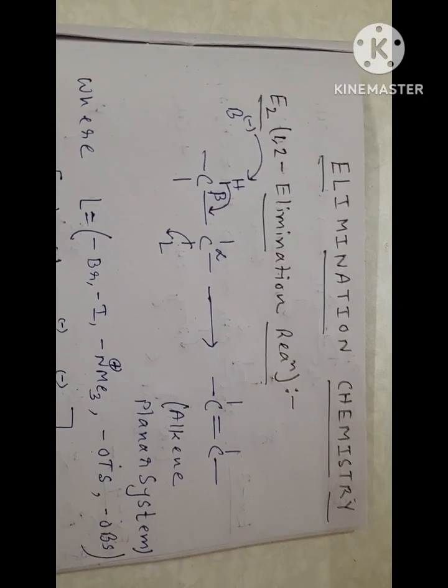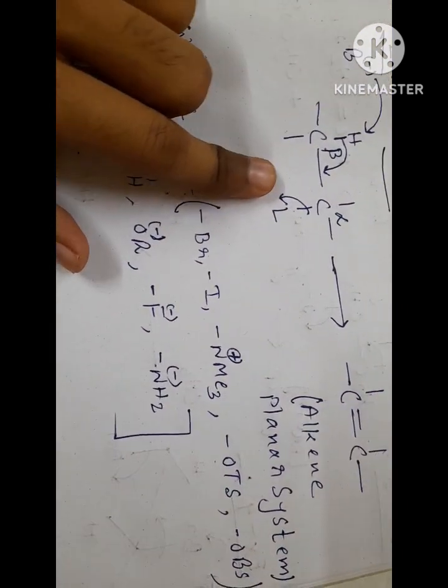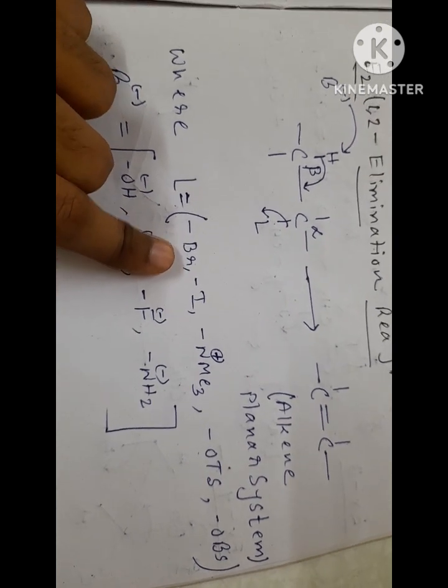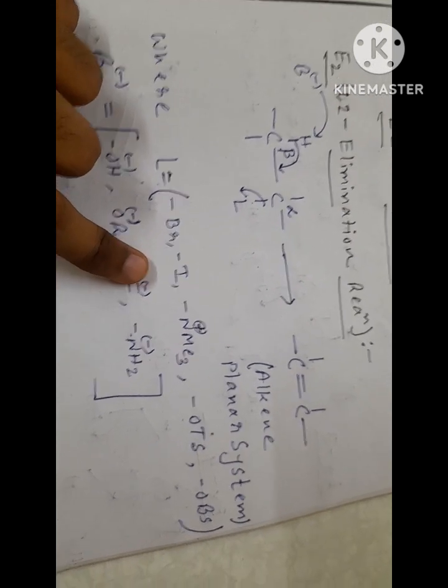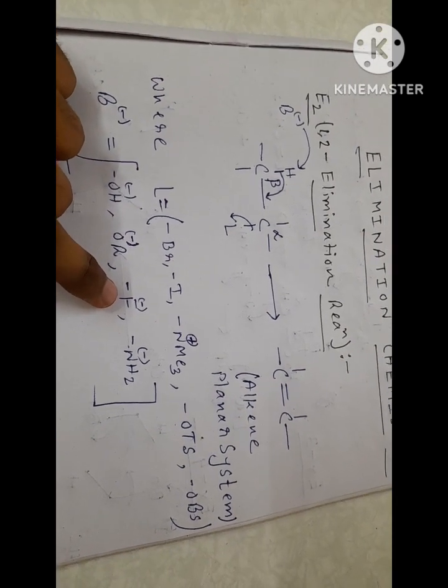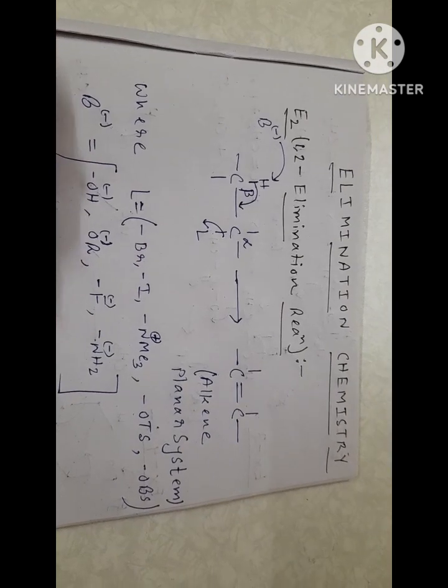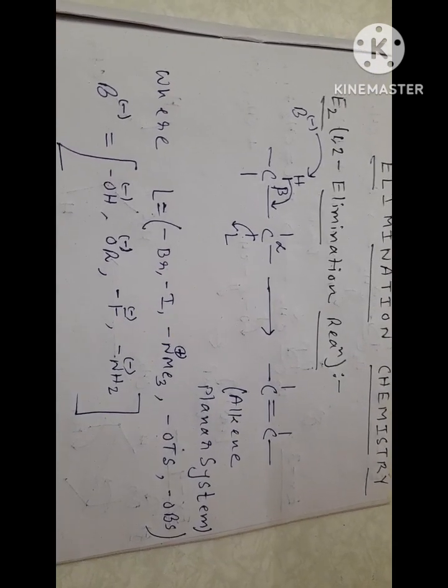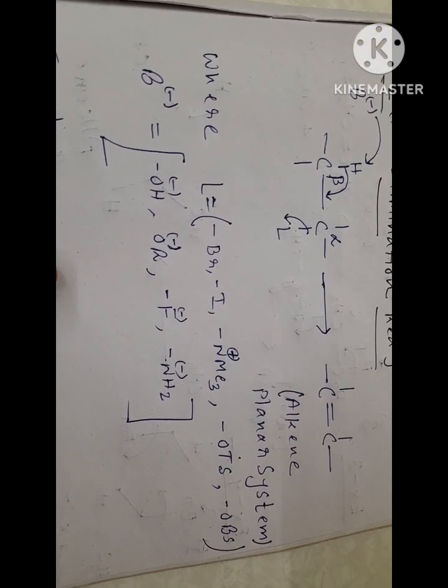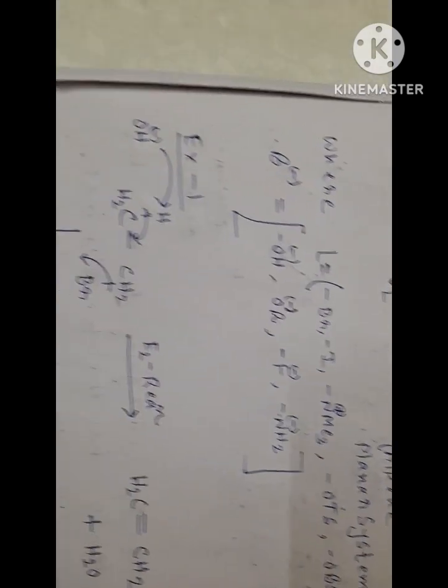How the reaction proceeds, let's get started. First, here you can see the leaving group. Various kinds of leaving groups are present like bromine, iodine, and ammonium plus. The greater the affinity of the group to leave from the system, greater will be the rate of the reaction. Base is also like hydroxyl ion or chloride ion.